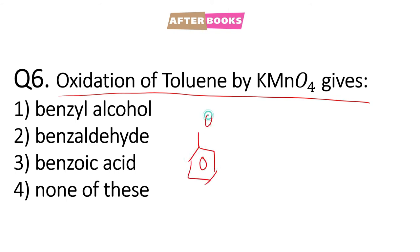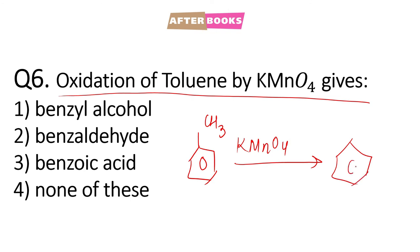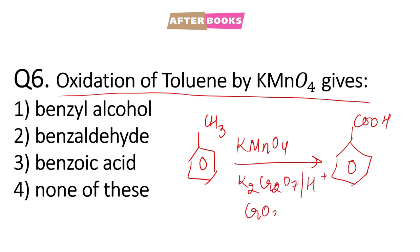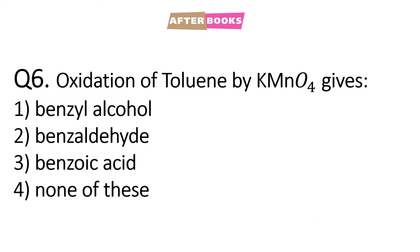Question number 6: oxidation of toluene by KMnO4 gives — this is toluene, oxidation karwa raha hai by KMnO4. Yahan pe benzoic acid is formed. Chahe hum yahan pe K2Cr2O7 use kar le in acidic media, ya CrO3 use kar le, ya acetic acid use kar le — in all the cases benzoic acid will be formed, which is option number 3.